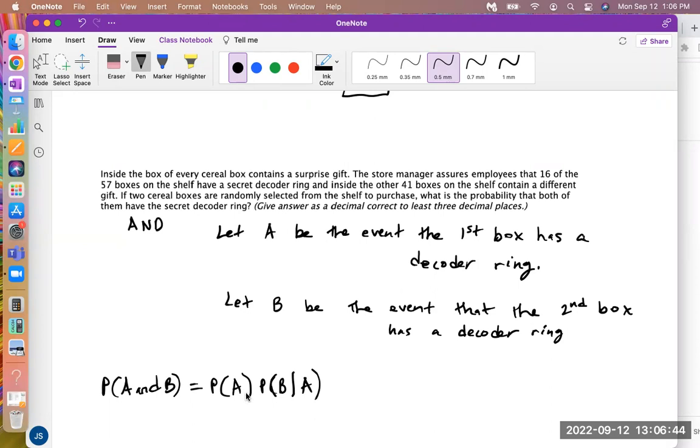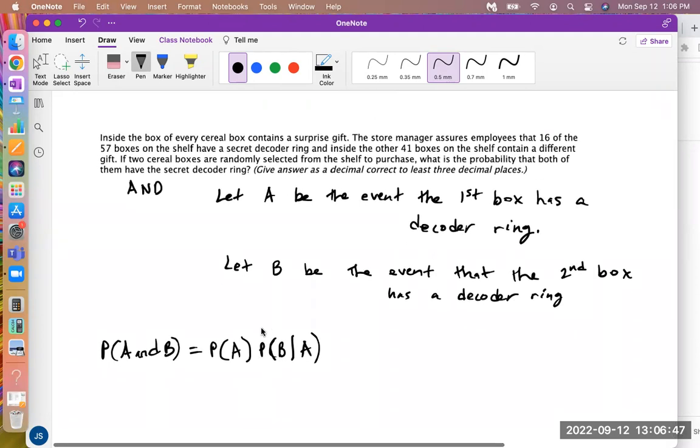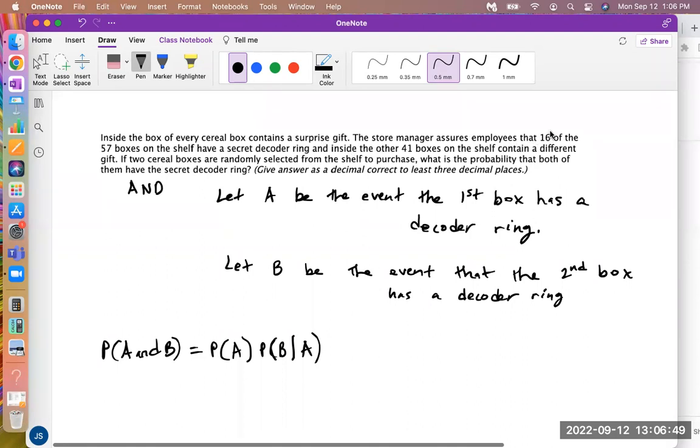So the probability that the first box has a decoder ring is the number of boxes with the decoder ring. That's 16 out of the total 57. The probability that the first box will have a decoder ring is 16 out of 57. Then the probability that the second box will have a decoder ring knowing the first one we chose already had a decoder ring.